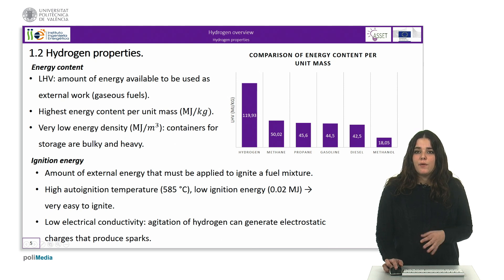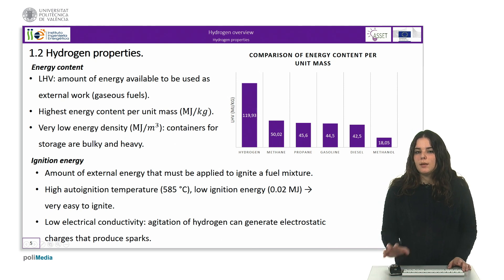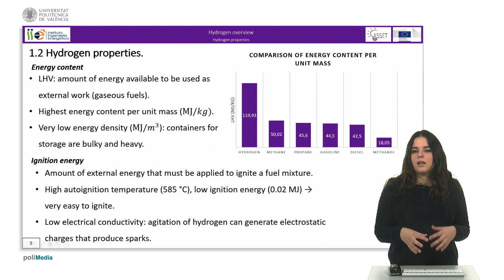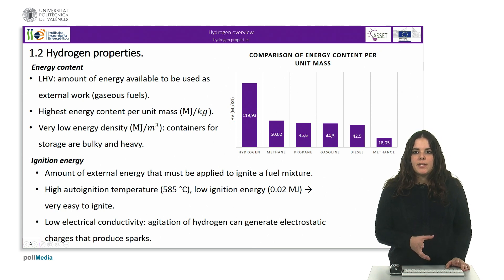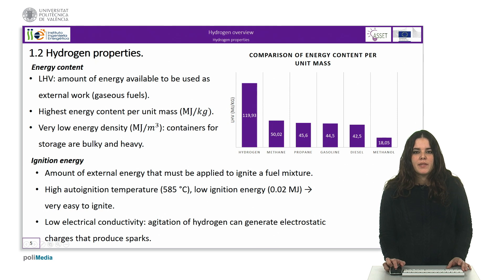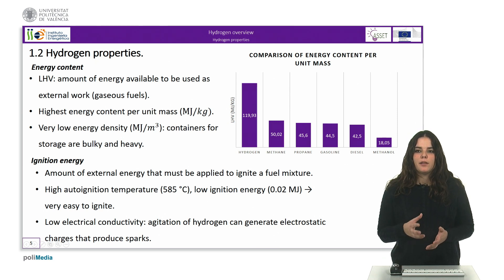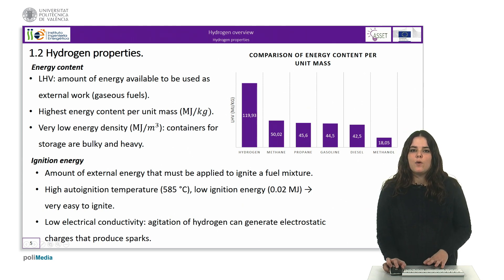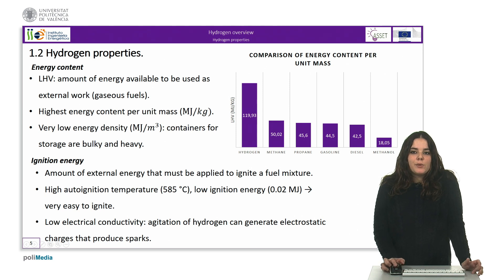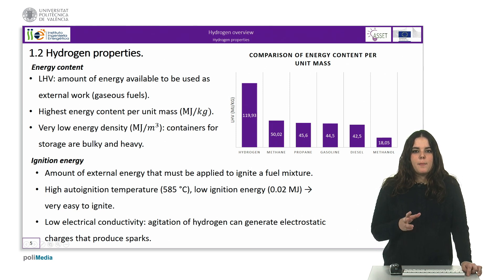Regarding the concept of ignition energy, which is the amount of external energy that must be applied to ignite a fuel mixture, hydrogen has a very low ignition energy of 0.02 millijoules, making it very easy to ignite, despite its high self-ignition temperature of 585 degrees Celsius. In fact, even a small discharge of static electricity from a human body can have enough energy to cause hydrogen ignition. Moreover, hydrogen has low electrical conductivity, meaning that flow or agitation of hydrogen generates electrostatic charges that can produce sparks. For this reason, any hydrogen storage equipment must be conveniently grounded.